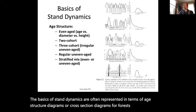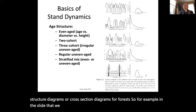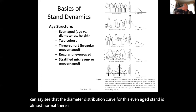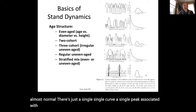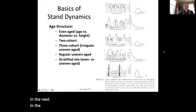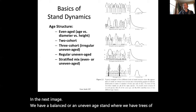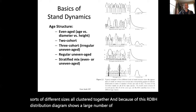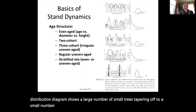For example, in the slide that we have here, we have an even-age stand at the very top. You can see that the diameter distribution curve for this even-age stand is almost normal — there's just a single curve, a single peak associated with the average DBH. In the next image, we have a balanced or uneven-age stand where we have trees of all sorts of different sizes clustered together, and our DBH distribution diagram shows a large number of small trees tapering off to a small number of large trees.